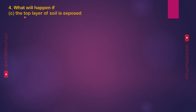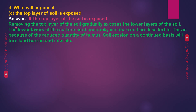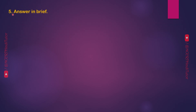What will happen if the top layer of soil is exposed? Removing the top layer of the soil gradually exposes the lower layers of the soil. The lower layers of the soil are hard and rocky in nature and are less fertile because of the reduced quantity of humus. Soil erosion on a continued basis will turn land barren and infertile.